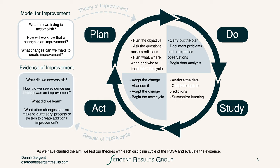The model for improvement questions start with: what are we trying to accomplish? This is very much about the aim of your theory. The second question is: how will we know that we've made a change that actually is an improvement? That gets to the measurement capacity of what you plan to do — how do you measure improvement? And the third question is: what changes could we make that would lead to improvement?